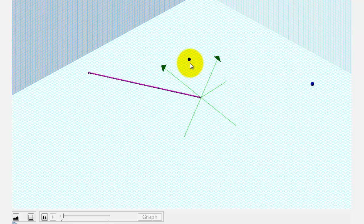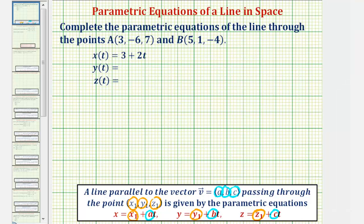If we write this in component form, it will give us our direction vector. So let's first find our direction vector, which would be vector AB.